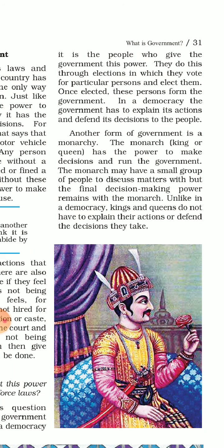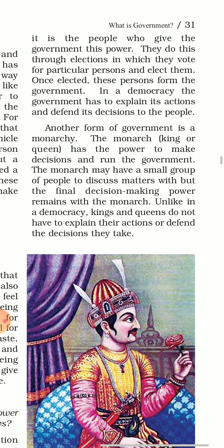Democracy is defined as the government by the people, for the people and of the people. In this system, power is transferred from one leader to another on the basis of people's choice. It is the people who give the government the power, and they do this through elections in which they vote for a particular person and elect them. Once elected, these persons form the government. In a democracy, the government has to explain its actions and defend its decisions to the people.